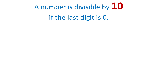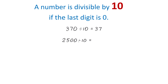And a number is divisible by 10 if the last digit is 0. For example, the number 370 is divisible by 10 because the last digit is 0, and 370 divided by 10 is 37. The number 2500 is also divisible by 10 because the last digit is 0, and 2500 divided by 10 is 250.